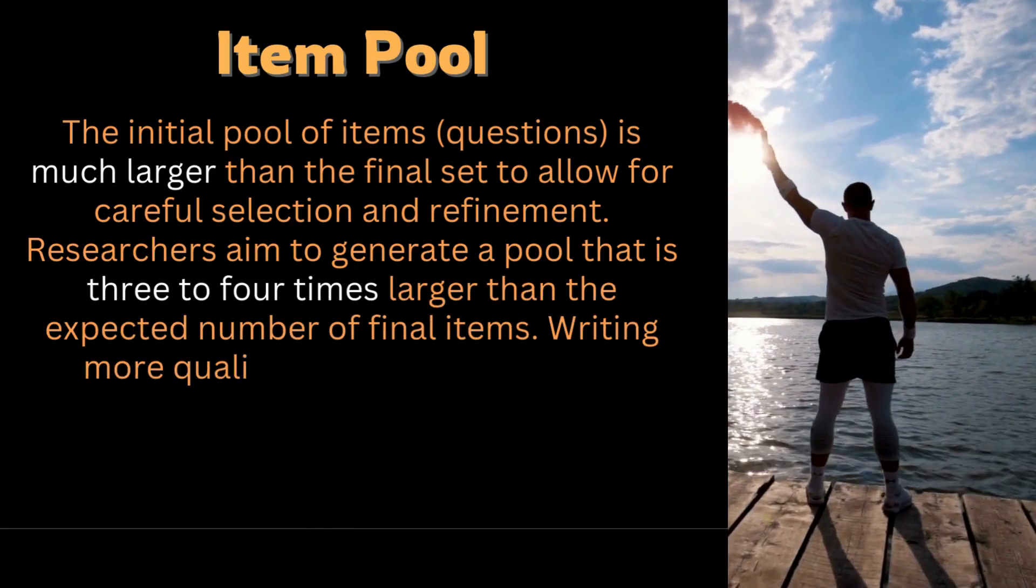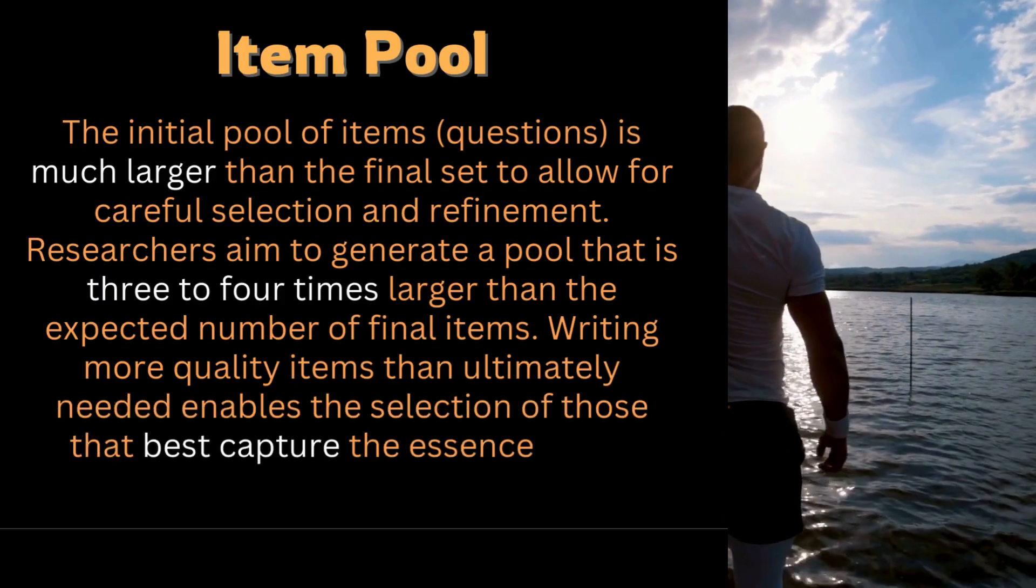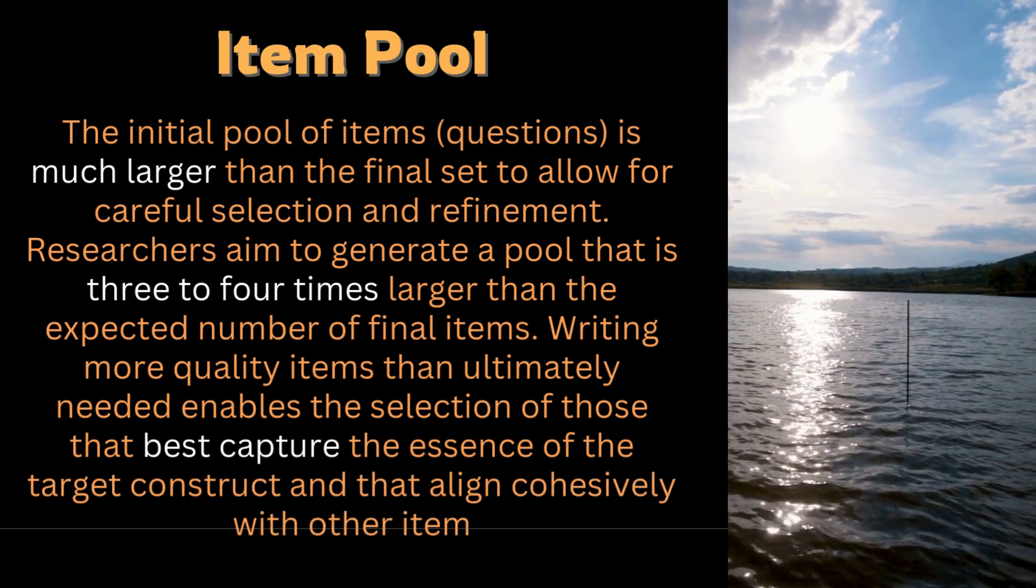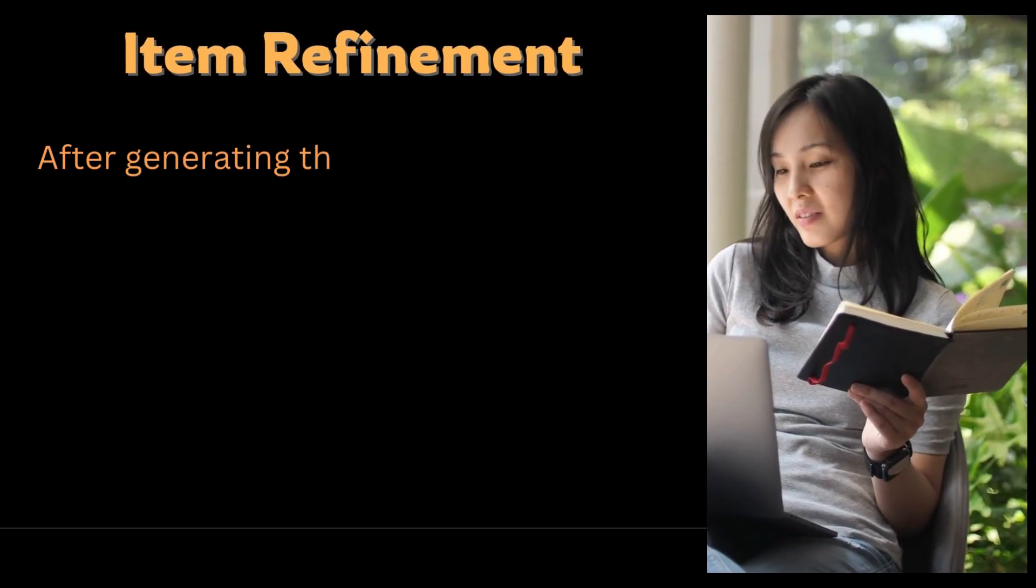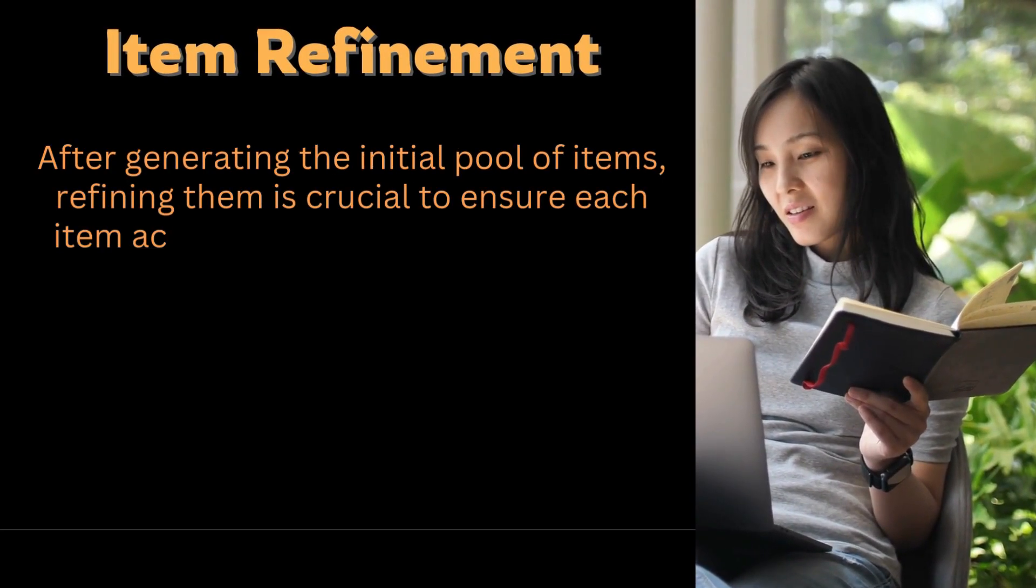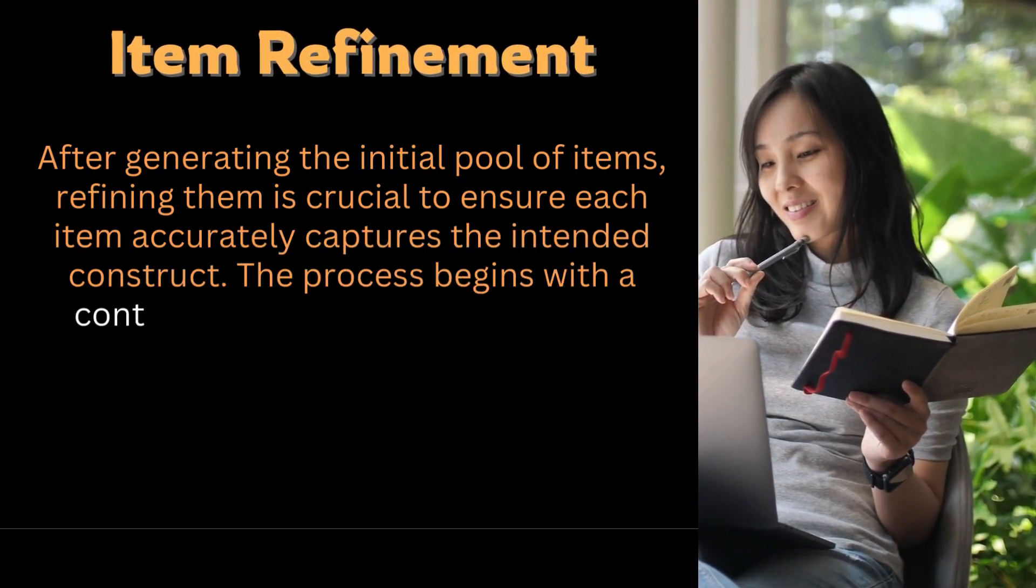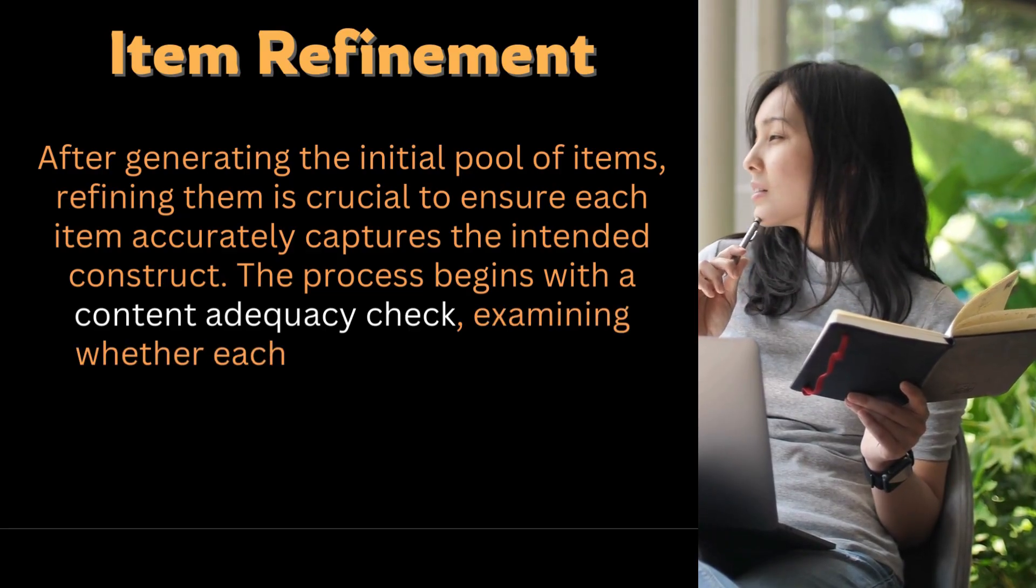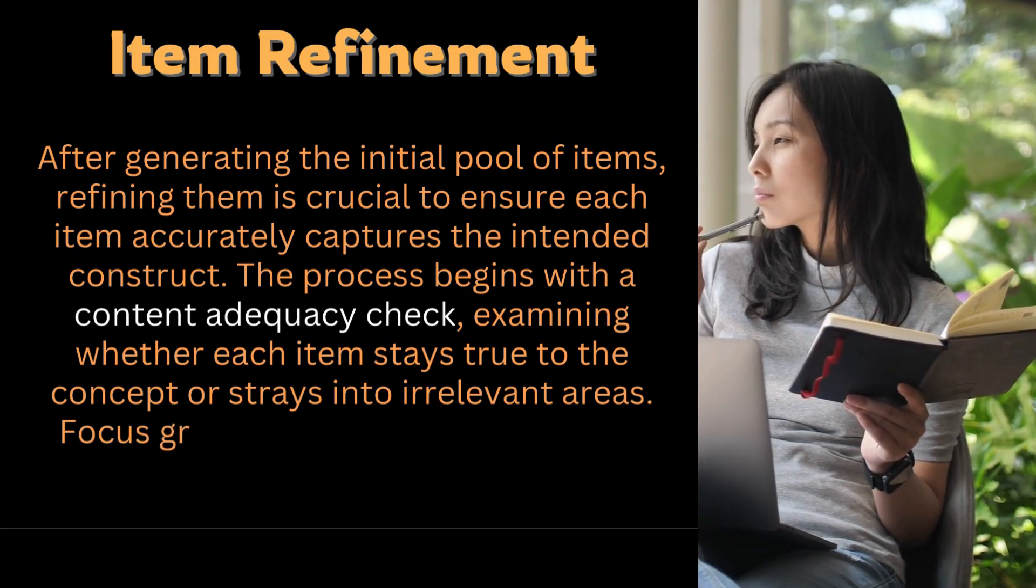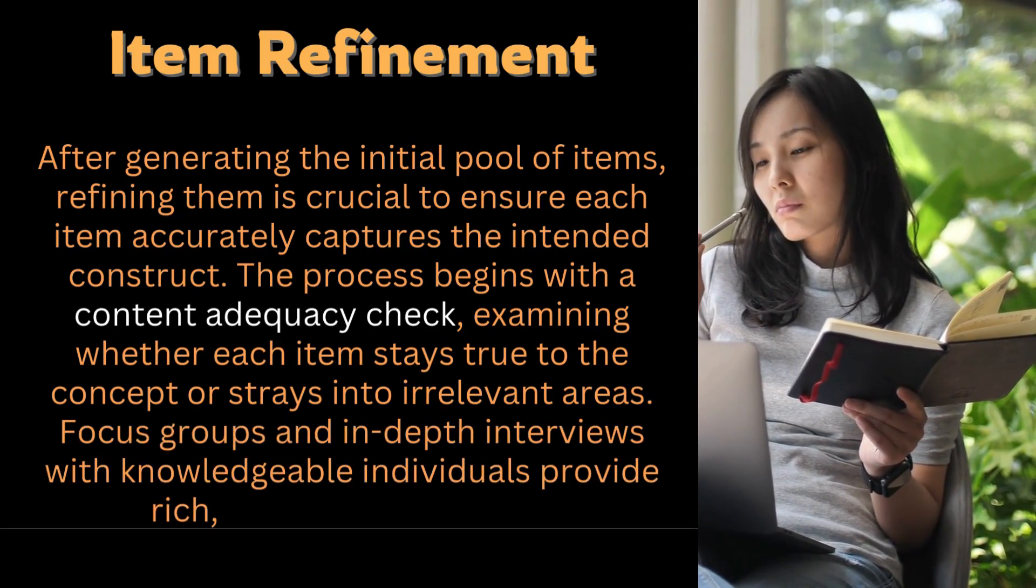Writing more quality items than ultimately needed enables the selection of those that best capture the essence of the target construct and that align cohesively with other items. After generating the initial pool of items, refining them is crucial to ensure each item accurately captures the intended construct. The process begins with a content adequacy check, examining whether each item stays true to the concept or strays into irrelevant areas. Focus groups and in-depth interviews with knowledgeable individuals provide rich qualitative feedback.